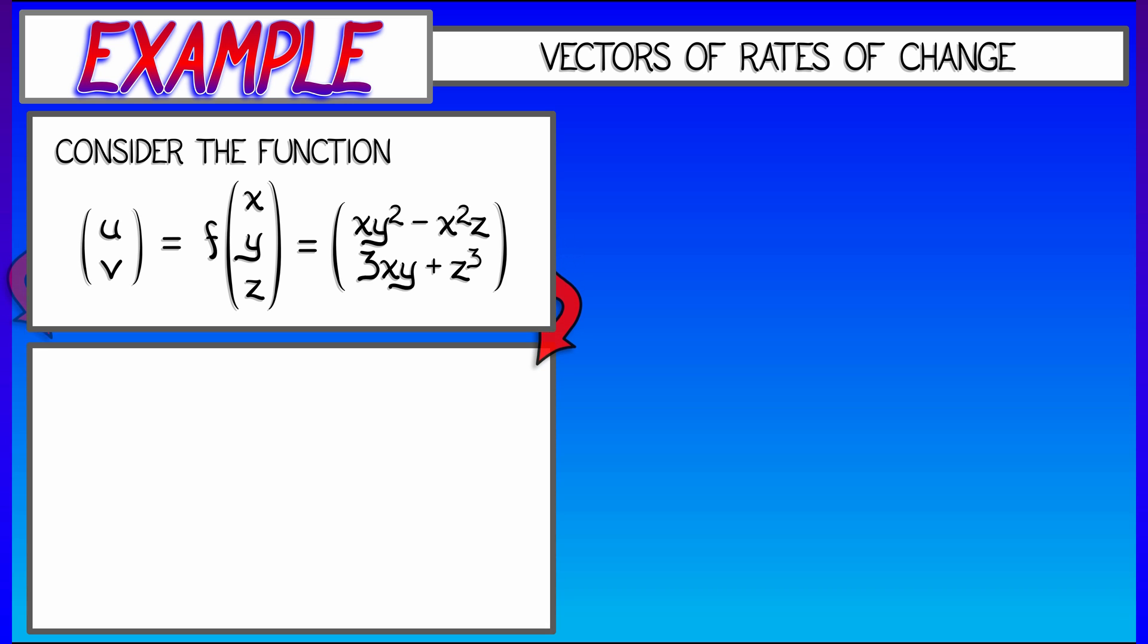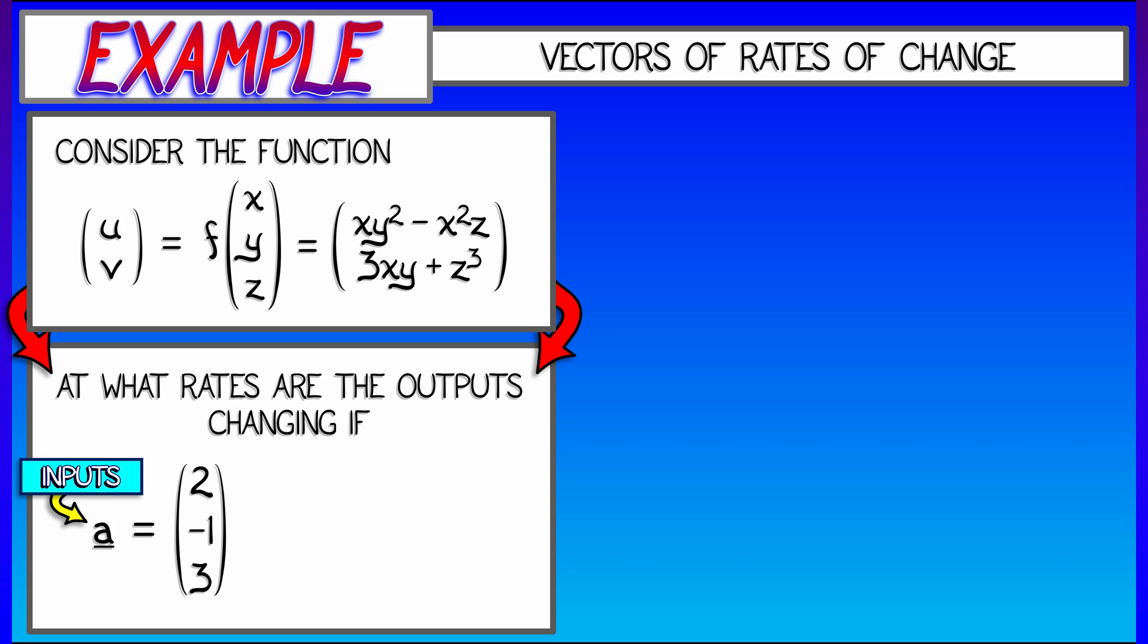Then what is the problem? The problem is if the inputs to this function are, let's say x is 2, y is negative 1, z is 3. Let's call that input a. Then I want to know how are the outputs of this function changing if the inputs are changing at rates negative 1, 2, and 0. So that means x dot, the rate of change of x, is negative 1. x is decreasing at unit rate, y is increasing at twice that rate, and z is not changing at all.